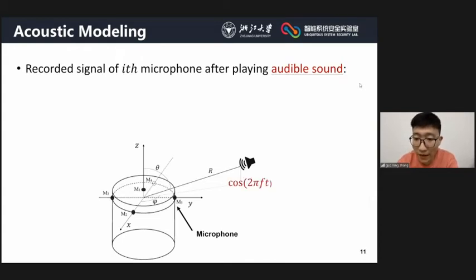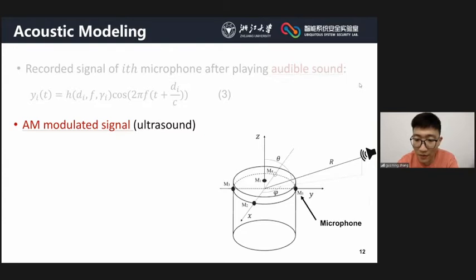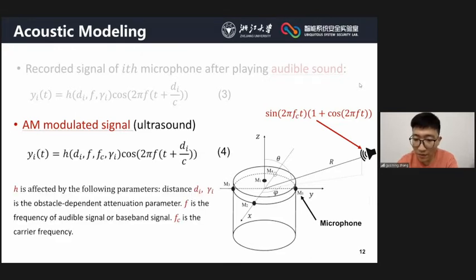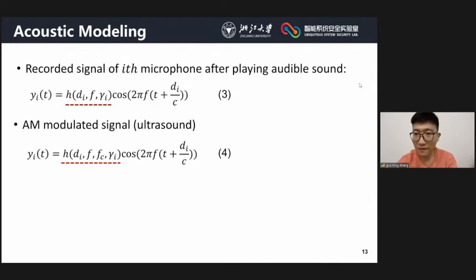We model the attenuation of audible and inaudible sound during propagation based on a microphone array with five microphones. When the sound is an audible single tone, the recorded signal of each microphone can be expressed as equation 3. The attenuation transfer function H is affected by distance, obstacles, and sound frequency. When the sound is amplitude-modulated ultrasound, after non-linearity, the received signal is expressed as equation 4. Compared with audible sound, the attenuation of the attack signal is also related to carrier frequency. As attenuation increases with frequency, the received signals at different microphones differ much more.